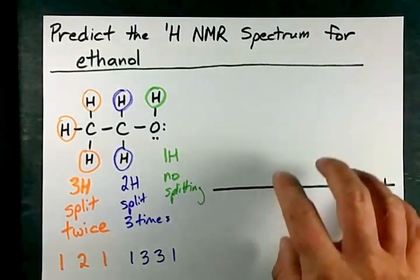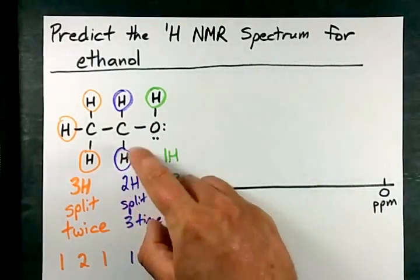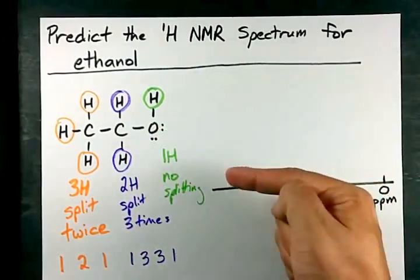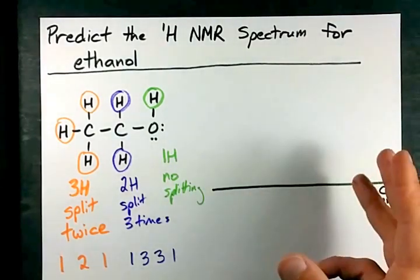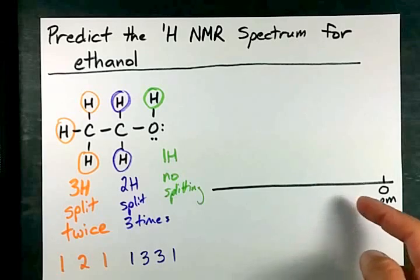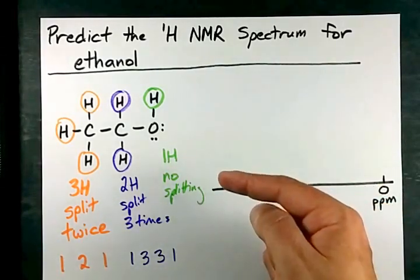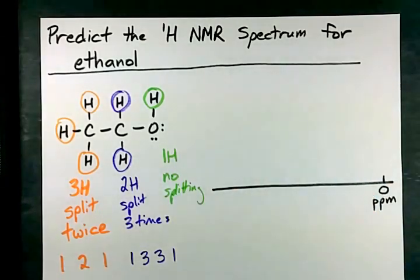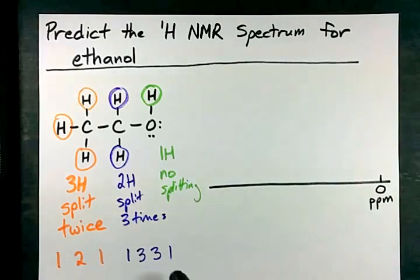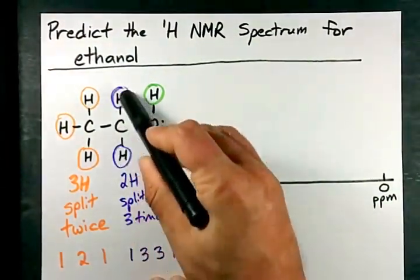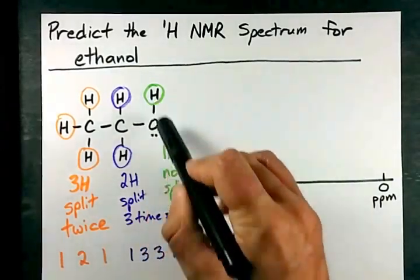Now, what I like people to keep in mind when they're drawing their spectrums is that generally, the closer hydrogens are to an oxygen, the farther downfield they're going to be. They're going to be farther away from zero, farther to the left. So I'm going to draw these two hydrogens first, because they are closest to the O. I'm going to draw him last.